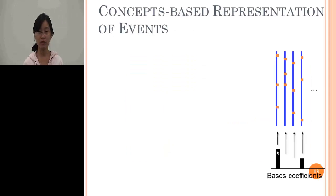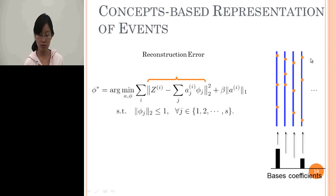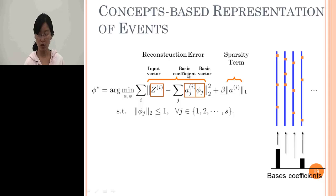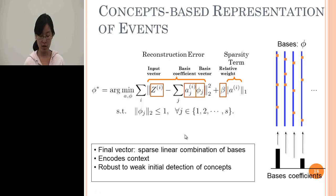As shown, the data-driven concept is very noisy. We further propose to use sparse coding to learn a set of sparse coefficients to represent the videos, instead of directly using the bag-of-concepts representation. Given the histogram representation of the videos, we learn a set of bases with their coefficients, making the coefficients very sparse. This captures context information and is robust to weak initial detection of the concepts.